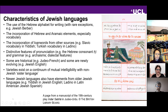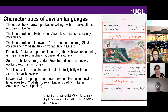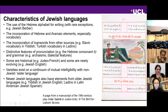Generally, the things that group Jewish languages together include the use of the Hebrew alphabet for writing, with very few exceptions — not a linguistic category but a useful identifying tool. They typically incorporate Hebrew and Aramaic elements, especially vocabulary, sometimes grammatical influence, and loanwords from other sources reflecting migrational patterns. For example, there's a lot of Slavic vocabulary in Yiddish, which is a Germanic language, and a lot of Turkish vocabulary in Ladino, because of the settlement patterns of Jews speaking those languages.